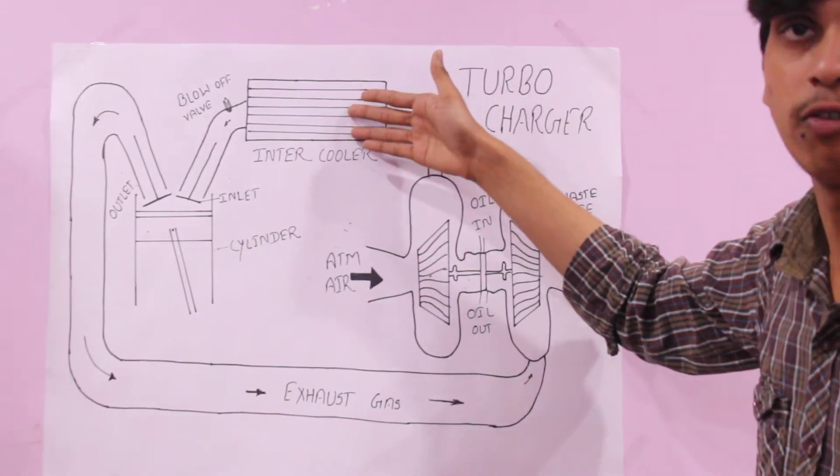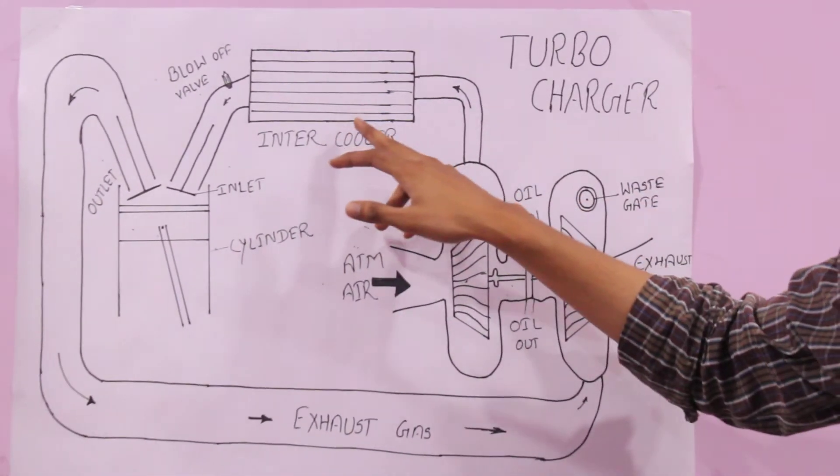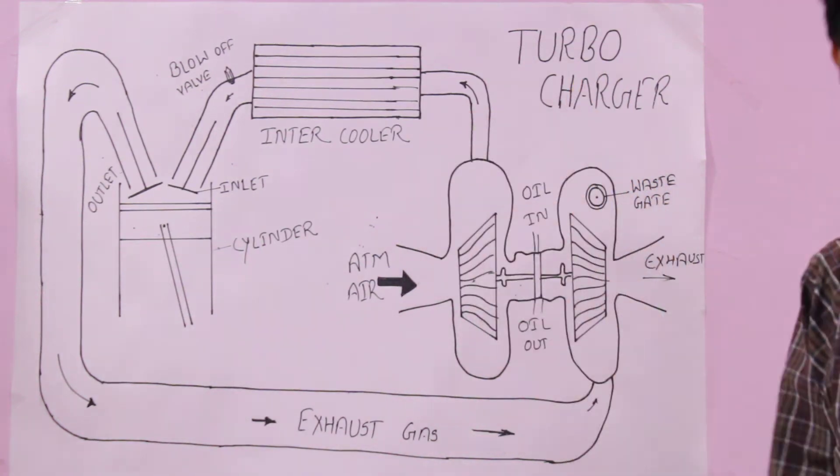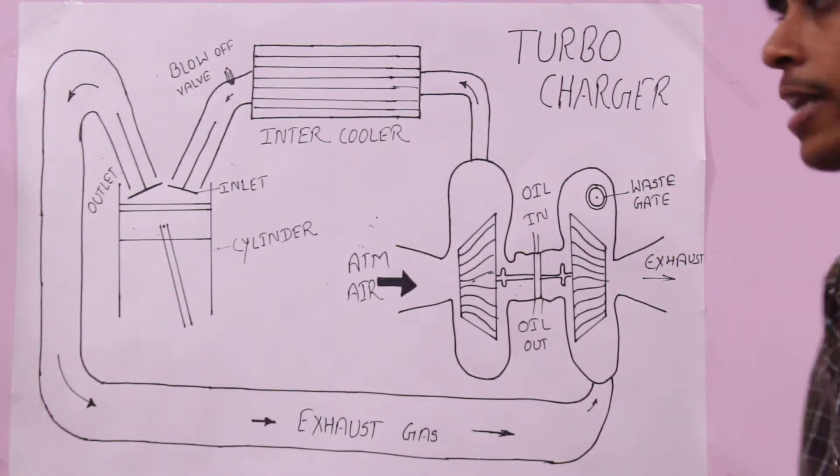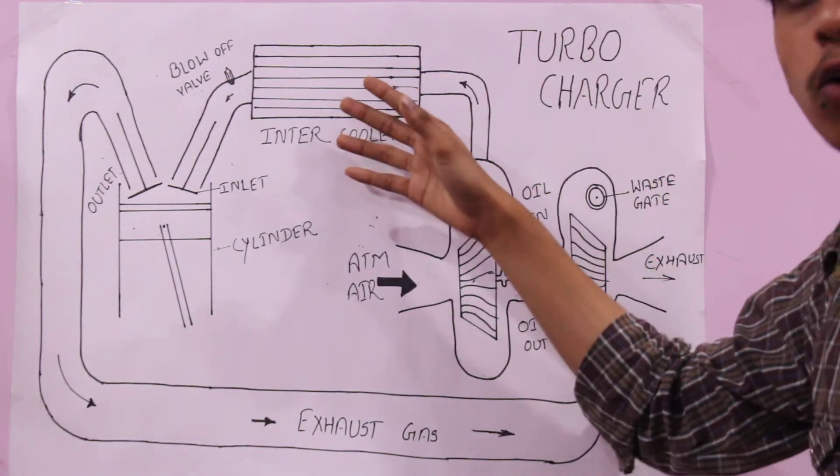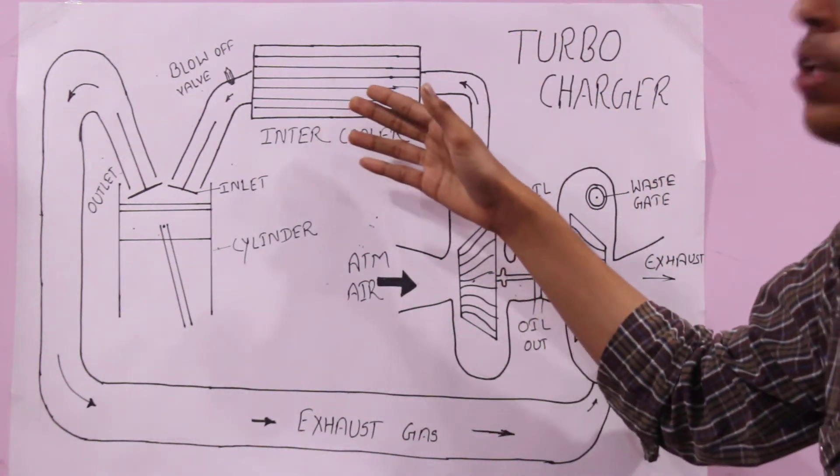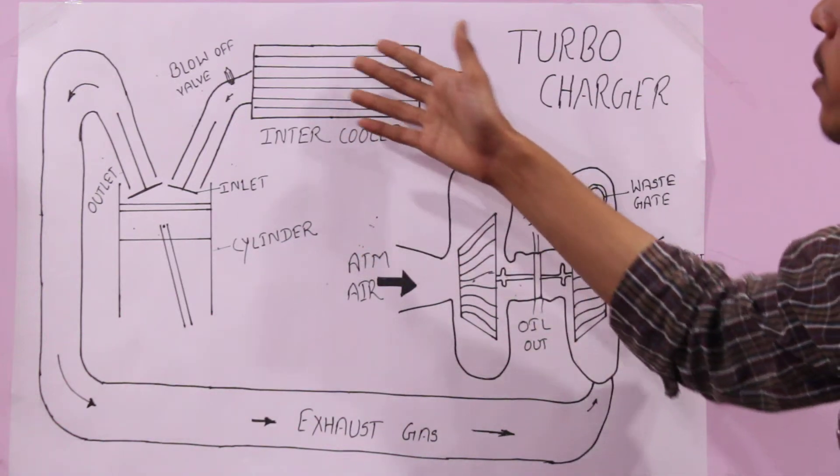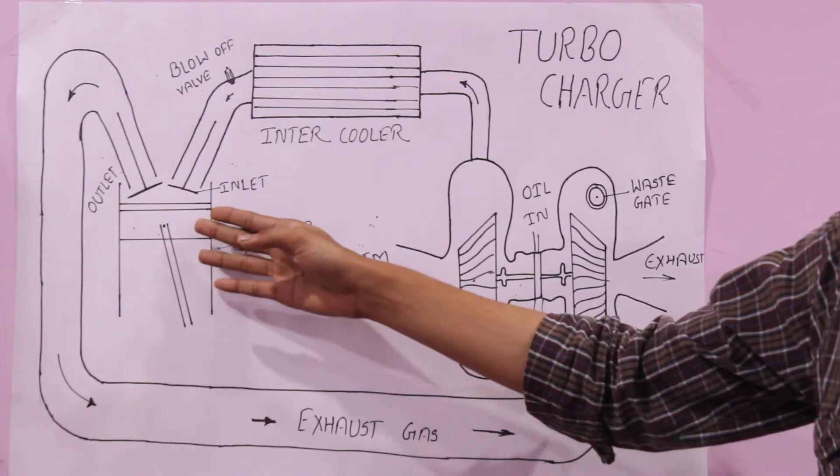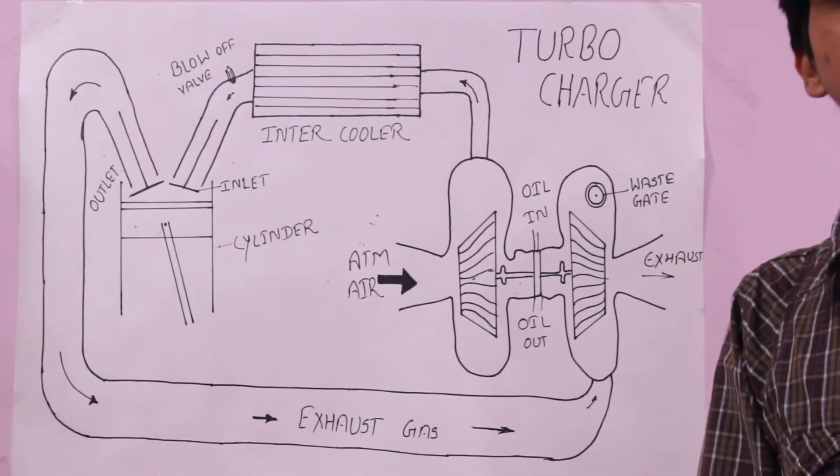You send this air into the intercooler, which is also called a charged air cooler, where the air becomes more dense and it again contains a high amount of oxygen. Then this air goes to the cylinder chamber where perfect combustion takes place.